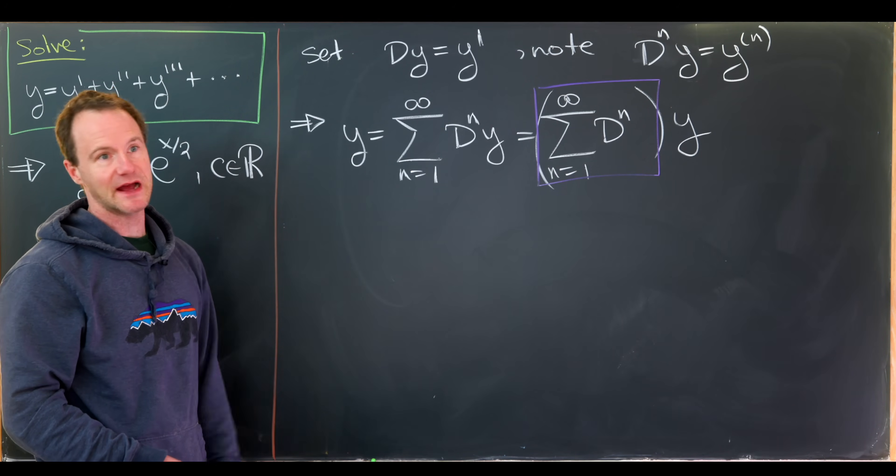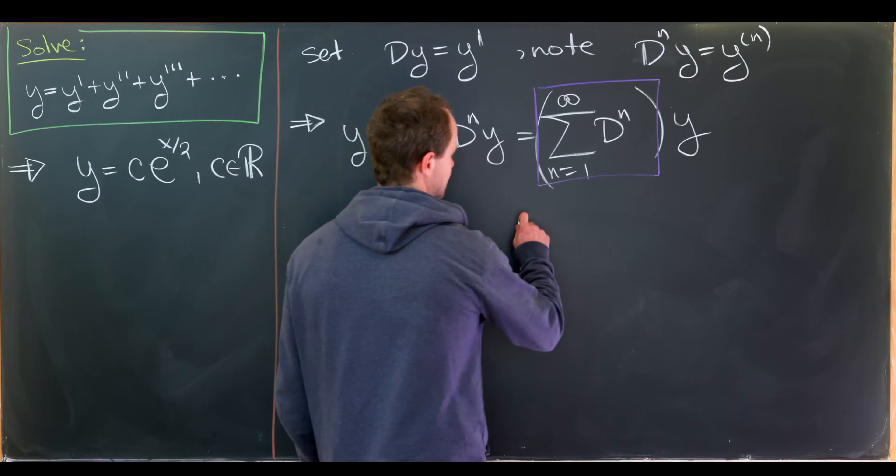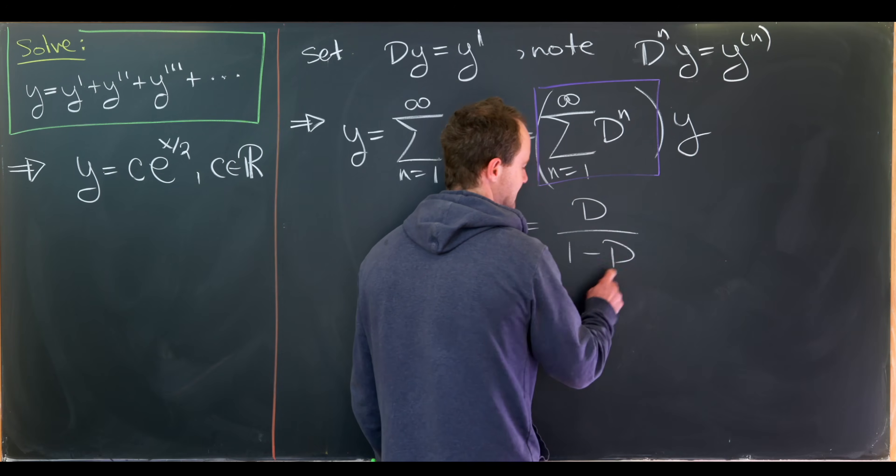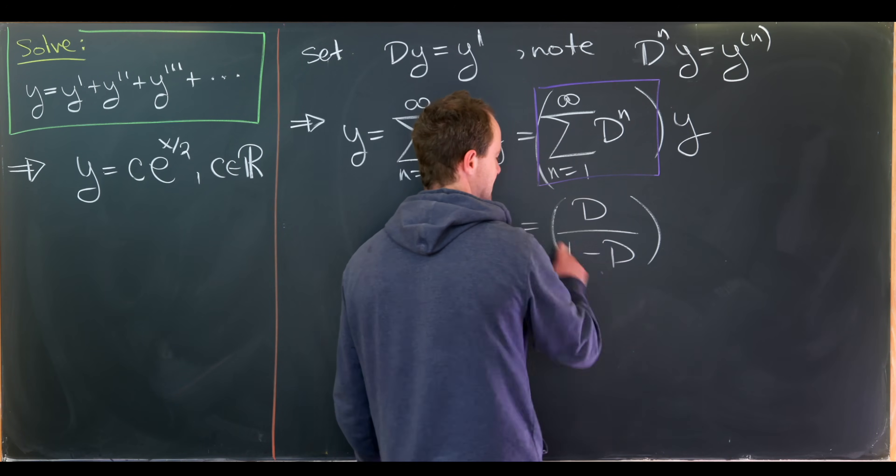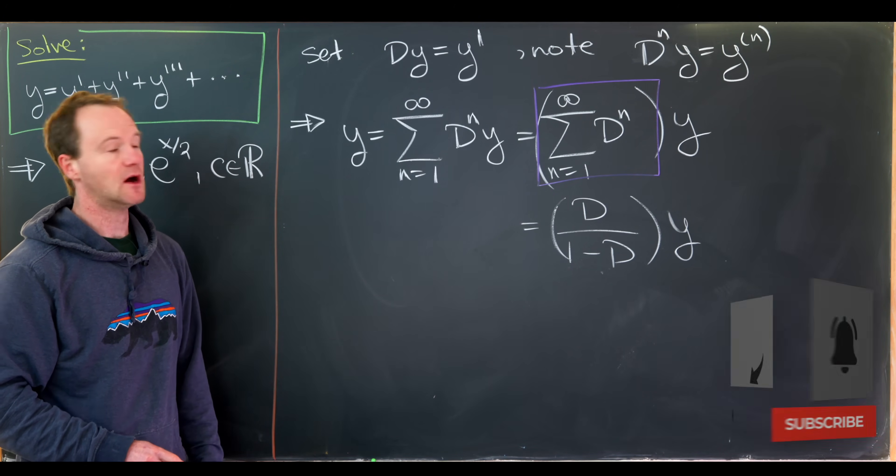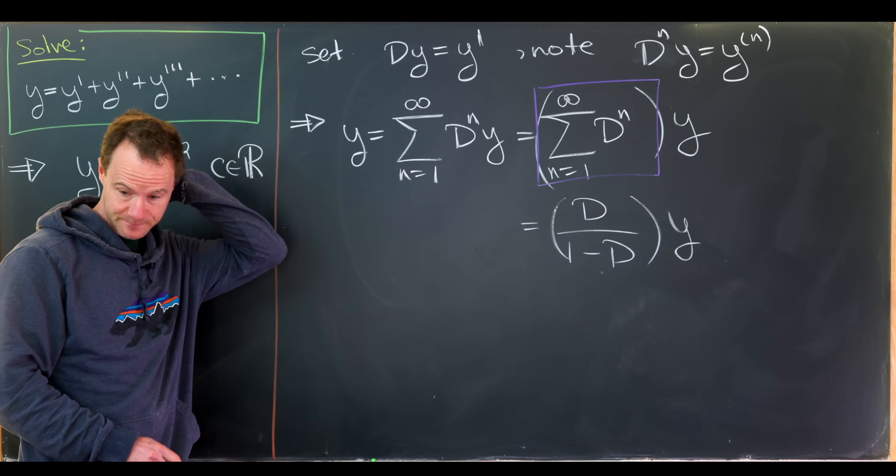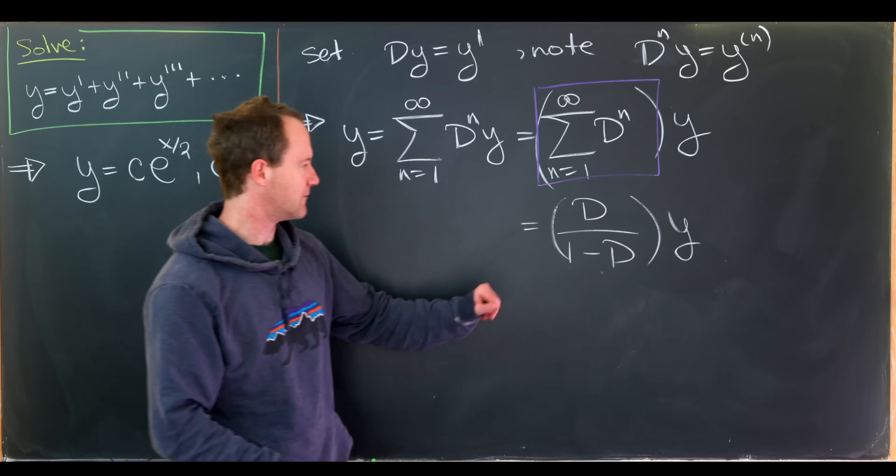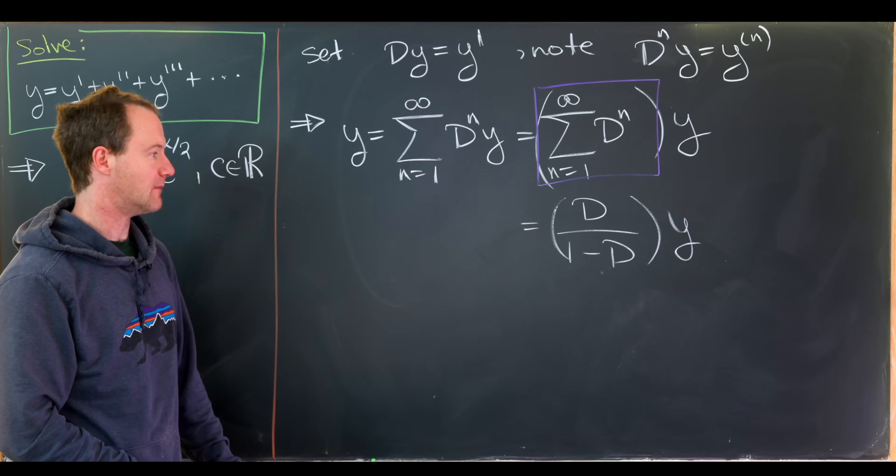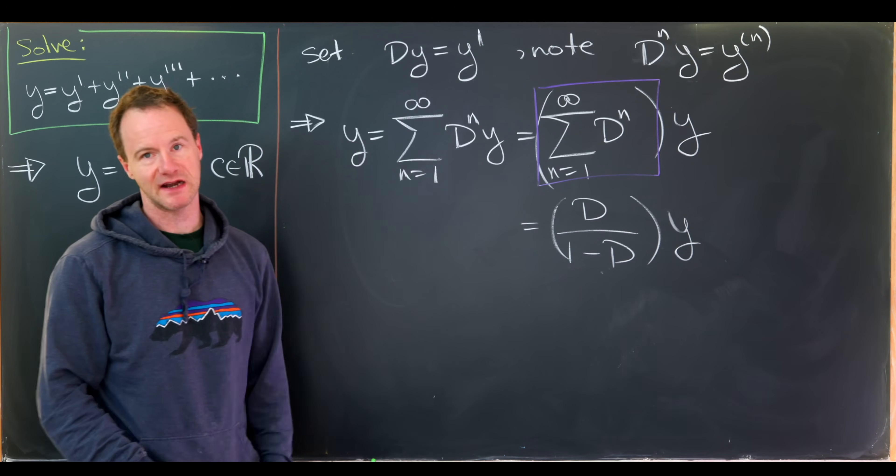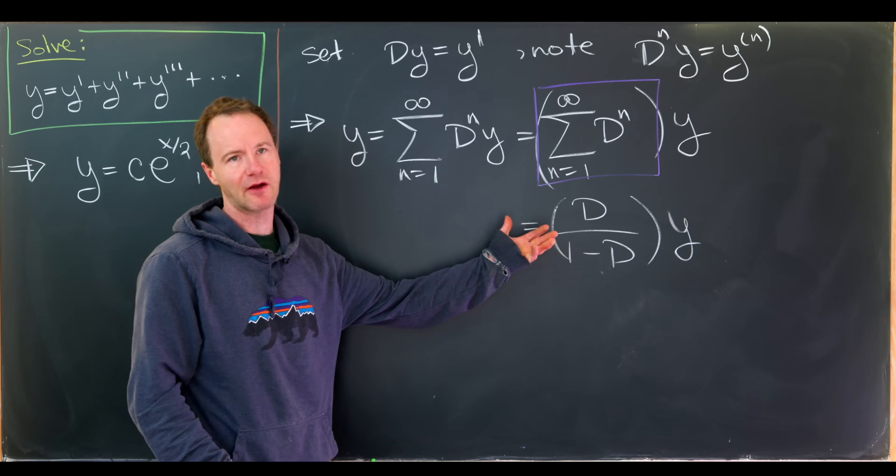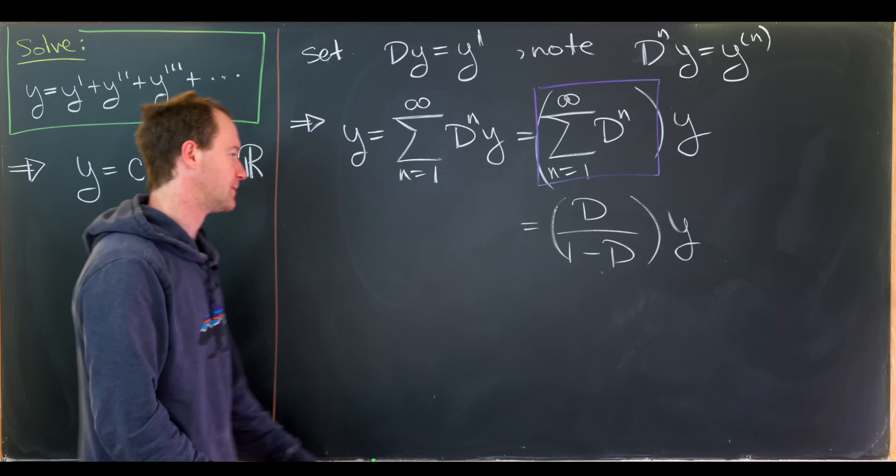You can think about these as linear transformations on a vector space of differentiable functions. But what do we have there? We've got a geometric series. So maybe we'll apply a geometric series summation formula to this. And that'll leave us with the starting term d over 1 minus the common ratio, so 1 minus d. So now we have this crazy operator like this d over 1 minus d on the function y.